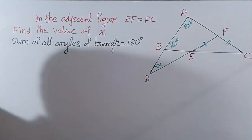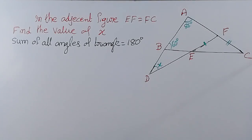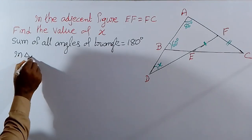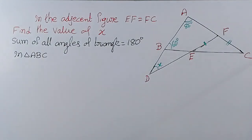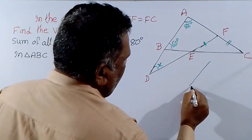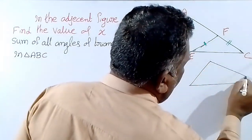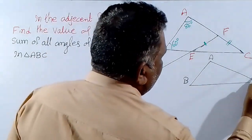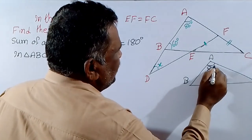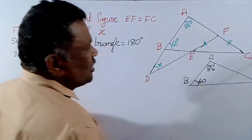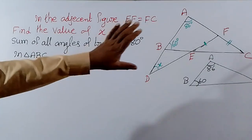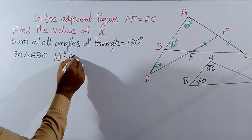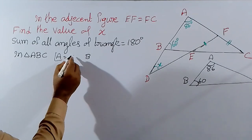Sum of all angles of a triangle is 180 degrees — three angles together are 180 degrees. Now, in triangle A, B, C: given angle A equal to 86 degrees and angle B equal to 60 degrees.